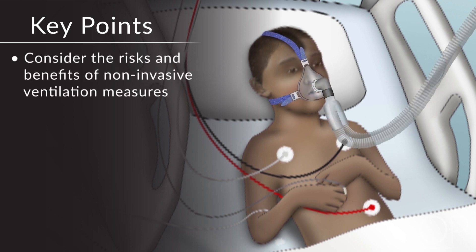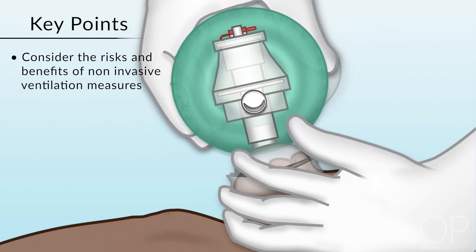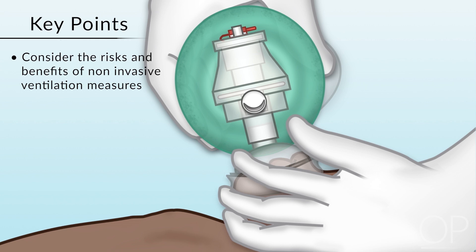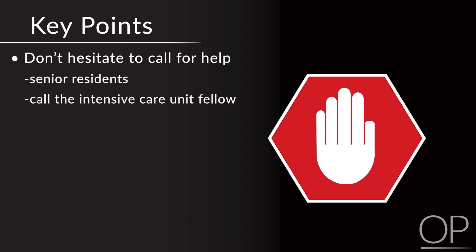Non-invasive measures have risks and benefits. If not implemented properly and reassessed, they may actually potentiate problems. If you place a bag and mask on someone's face and don't do it properly, you can create airway obstruction. Giving too much pressure or not fully inflating the chest may impair mechanics, lead to gastric distension, decrease FRC, and increase aspiration risk. Be cautious and thoughtful about any interventions. Call for help — low threshold. You're in the hospital, the nurse has called you, and you should rely on your senior residents or call the ICU fellow. Hit the code blue if you are truly, truly concerned.